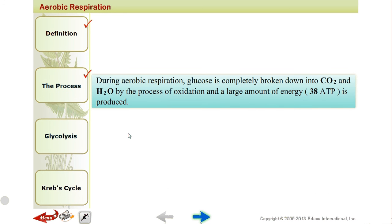During aerobic respiration, glucose is completely broken down into carbon dioxide and water by the process of oxidation, releasing a large amount of energy — 38 ATP. When food is properly broken down, it gives you an excess amount of energy, that is 38 ATP. ATP is the energy currency of the cells, produced in the mitochondria. ATP stands for adenosine triphosphate.